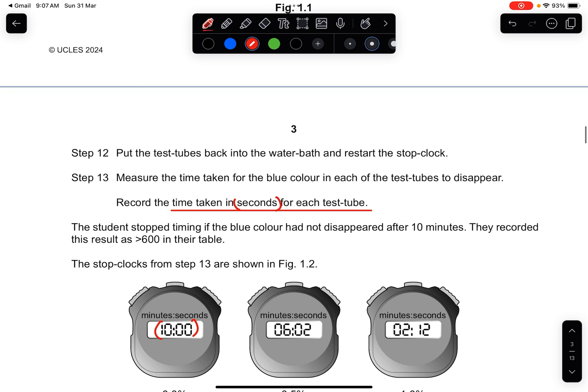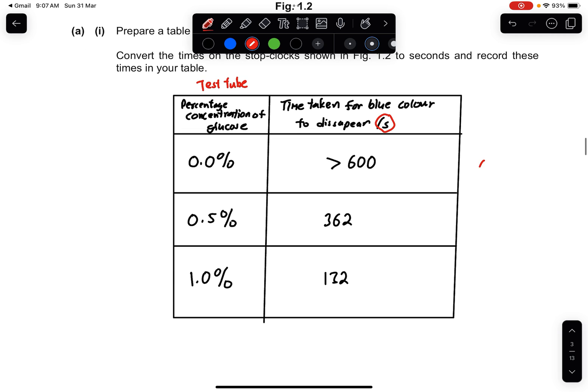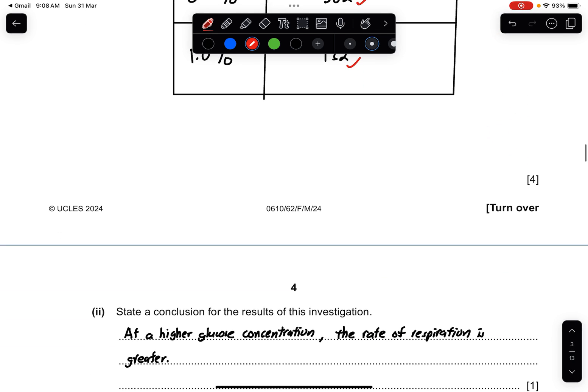You can also put the time taken for the blue colour to disappear and units is important. Then you fill in your concentration. For 0.0% is 10 minutes. But are you going to put 600 seconds only? No, you put more than 600. Why? Because the question says that if the colour had not disappeared after 10 minutes, they record this as the result. So if you never read the question properly and you put 600, this whole thing will be wrong. And the rest of it is just simple mathematics. You should be getting 362 and 132. So this is your 4 marks.